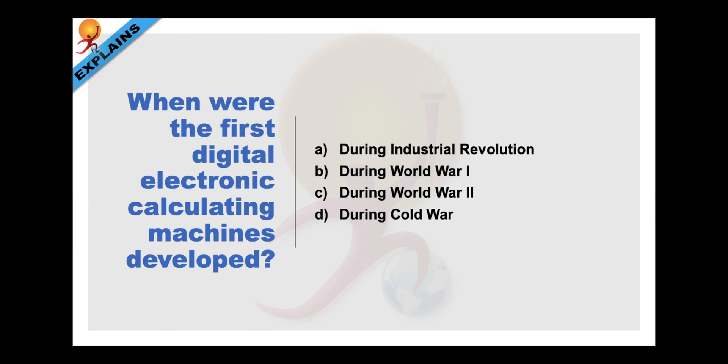When were the first Digital Electronic Calculating Machines developed? During Industrial Revolution, World War I, World War II or during the Cold War? Now though during the Industrial Revolution, some mechanical devices were built to automate long and difficult tasks. Like we have seen in the case of Jacquard Loom in our earlier video. But the first Digital Electronic Calculating Machines were developed during World War II.